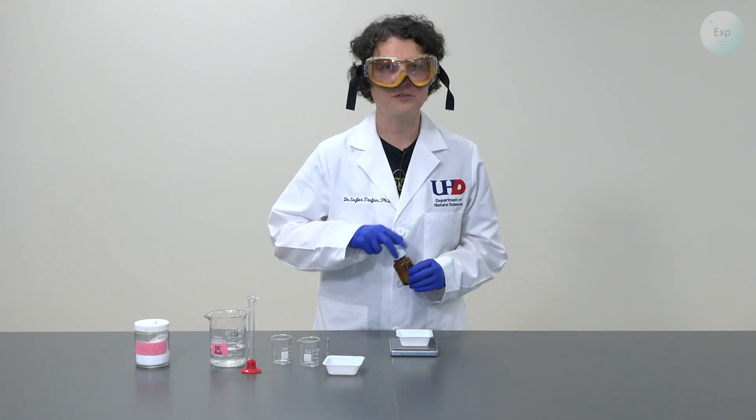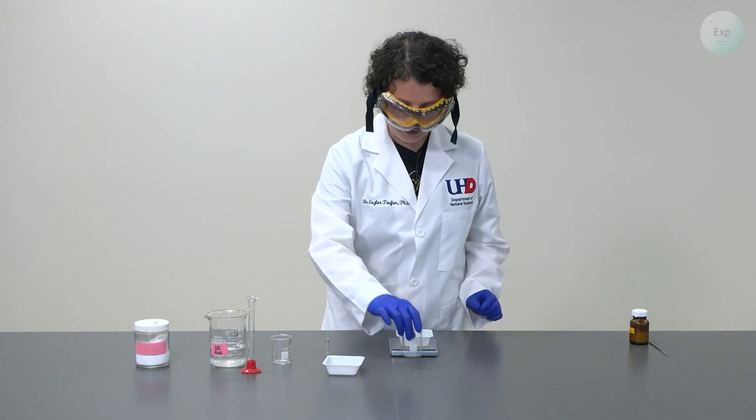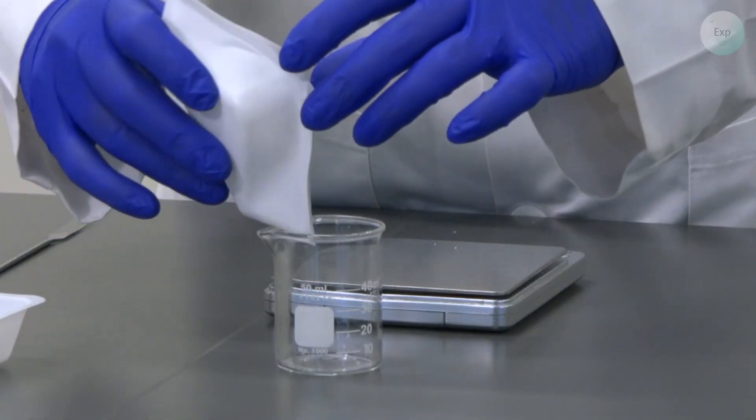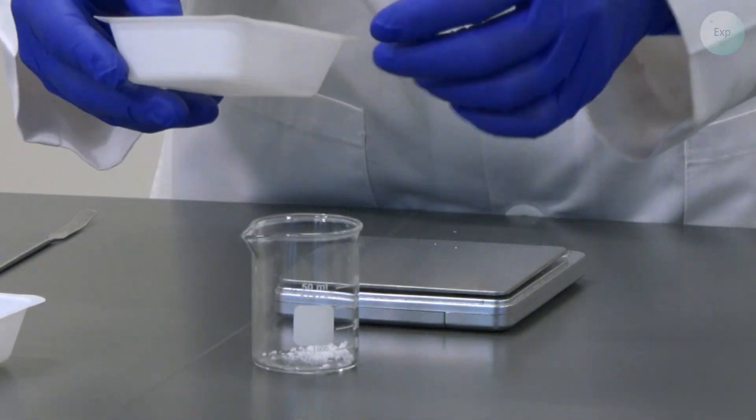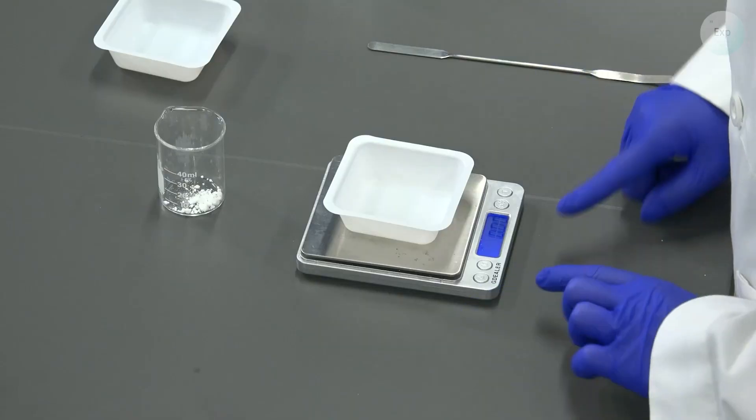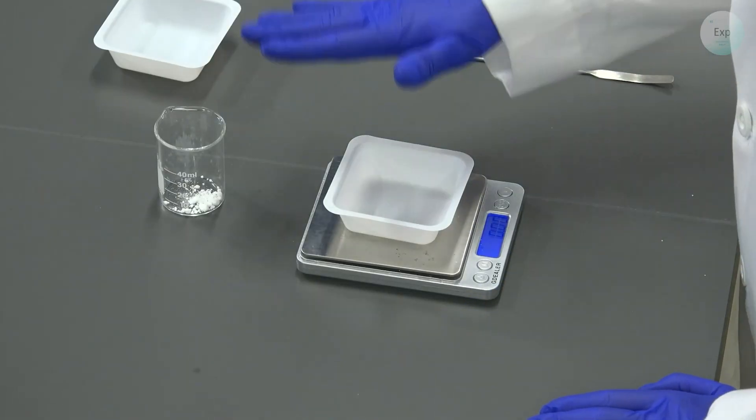I measured out 1.12 grams of calcium chloride. I can set this aside and I will transfer my calcium chloride into my first beaker. I can place the weighing boat back on the scale and it tells me 0.00 which means I transferred all the calcium chloride into my beaker.